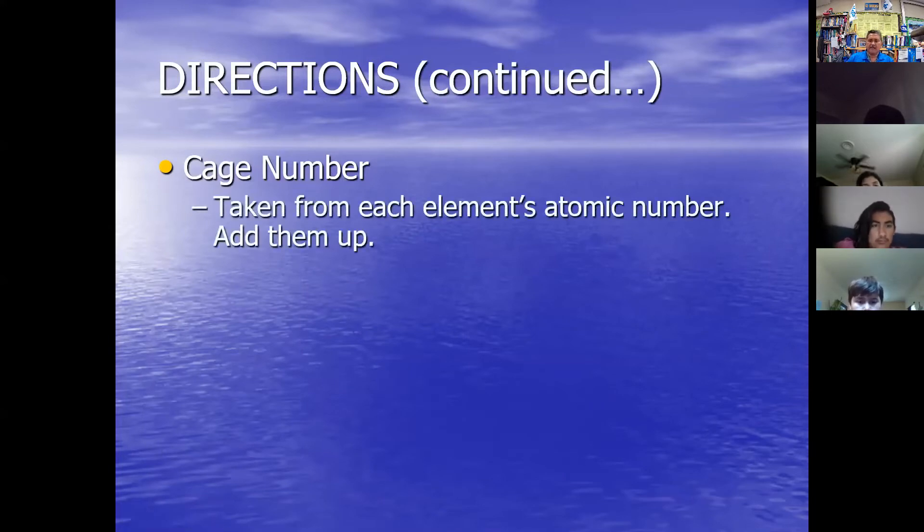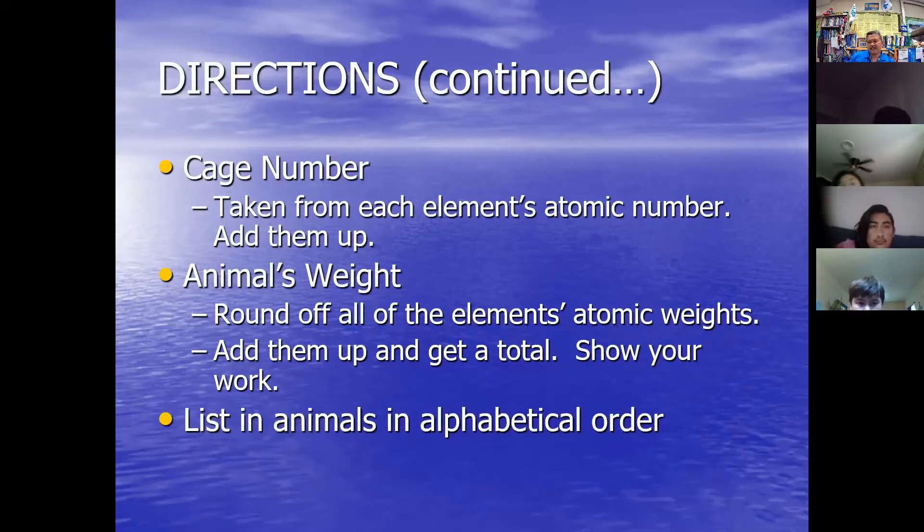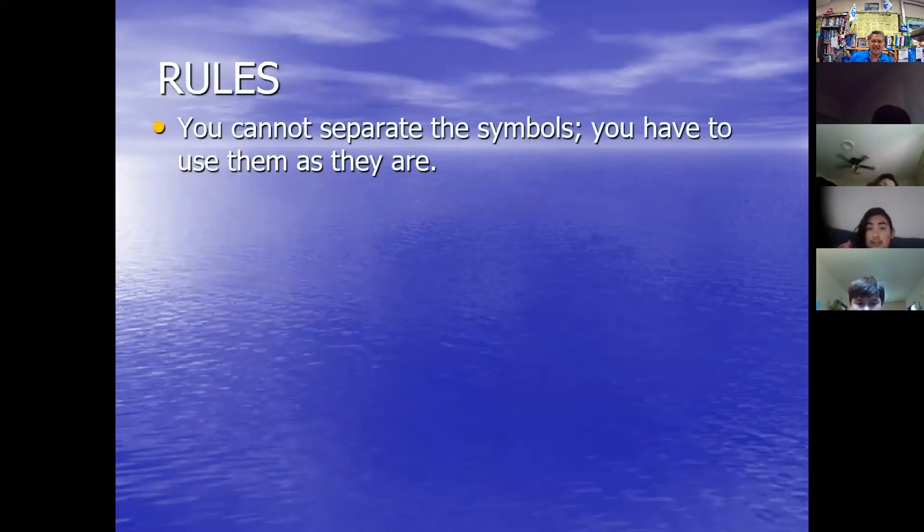Once again, the cage numbers are made from the atomic numbers. You just add those up. And then the atomic masses make up the animal's weight. Round off all the elements' atomic weights, add them up, get a total, show your work. You're going to list your 35 animals in alphabetical order on your chart. And there are rules. You cannot separate the symbols, you have to use them the way they are.